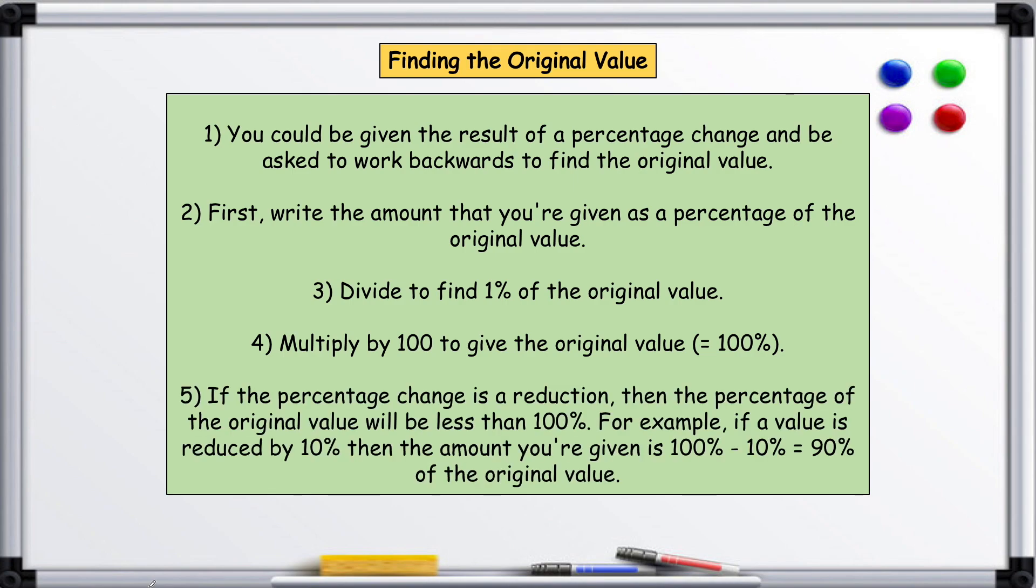If the percentage change is a reduction, then the percentage of the original value will be less than 100%. For example, if a value is reduced by 10%, then the amount you're given is 100% minus 10, so it will equal 90% of the original value. Again, this sounds complicated, but when I walk you through an example, you'll understand.